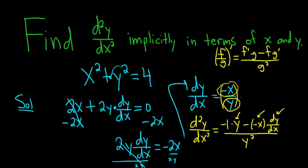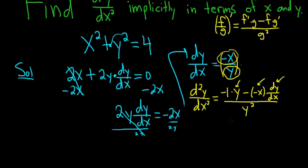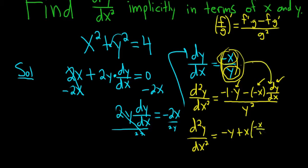Now we can plug in dy/dx into this equation. So we have the second derivative with respect to x is equal to negative y, and then negative and negative is positive, so it's plus. Then we're going to plug in negative x over y. So we get negative x over y over y squared.